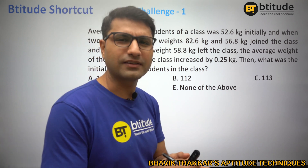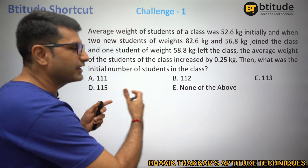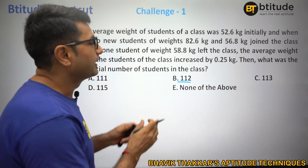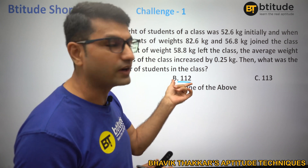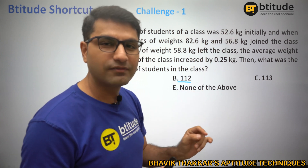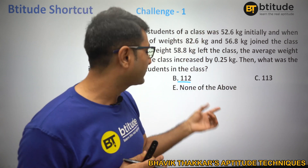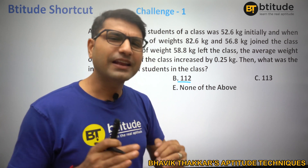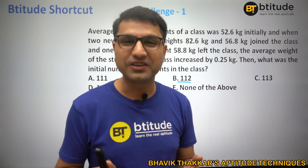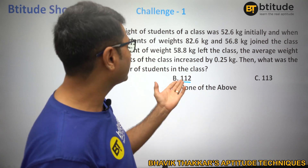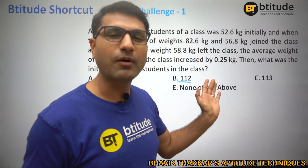Starting with the first method — let's think about going by option. In this particular question, if I choose option 112 as the number of students and multiply it by the average to find the total weight, it will simply kill our time. And if the calculation doesn't fit, we'll have to pick another option. So we must understand why we are not choosing a method. You can't really test it easily — it's simply killing your time. Forget about the option method.